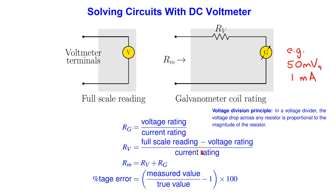This fact can be used to work out the desired value of Rv as shown here. The galvanometer resistance Rg can be found by applying Ohm's law. The effective meter resistance Rm is given by the sum of Rv and Rg. This effective meter resistance of a real voltmeter is not infinite, hence the voltmeter adds resistance to the circuit in parallel with the element whose voltage is being measured. The percentage error gives us a measure of how much the meter disturbs the circuit.